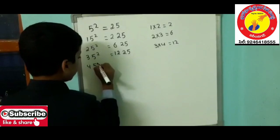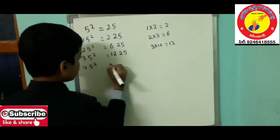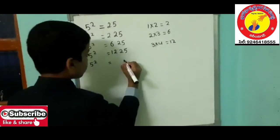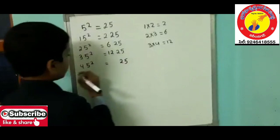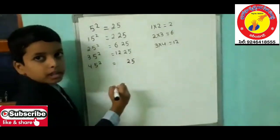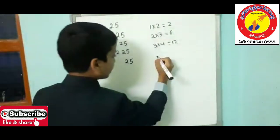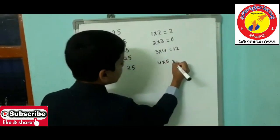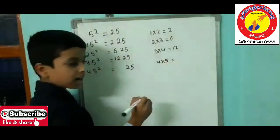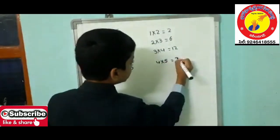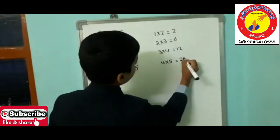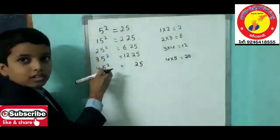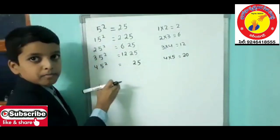For 45 squared: 5 squared is 25, and the tens digit is 4. The next number after 4 is 5, so we multiply these both numbers — 4 times 5 is 20. Therefore 2025 is the square of 45. In this way we can find all squares of numbers ending in 5.